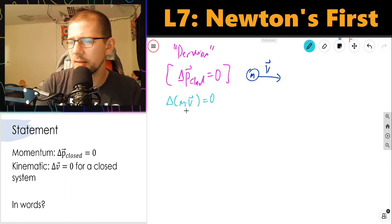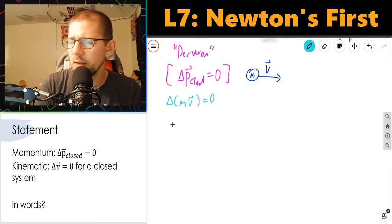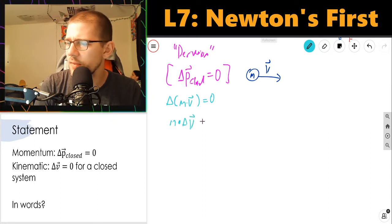So we're going to leave mass constant. This change really is only going to affect the velocity. So it's going to be m·Δv = 0.